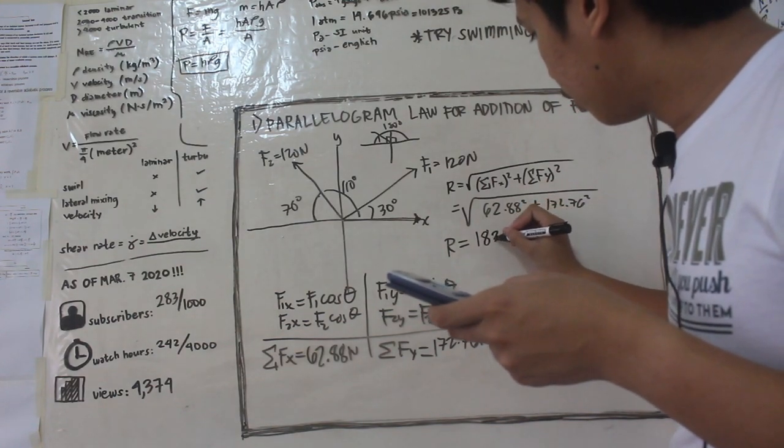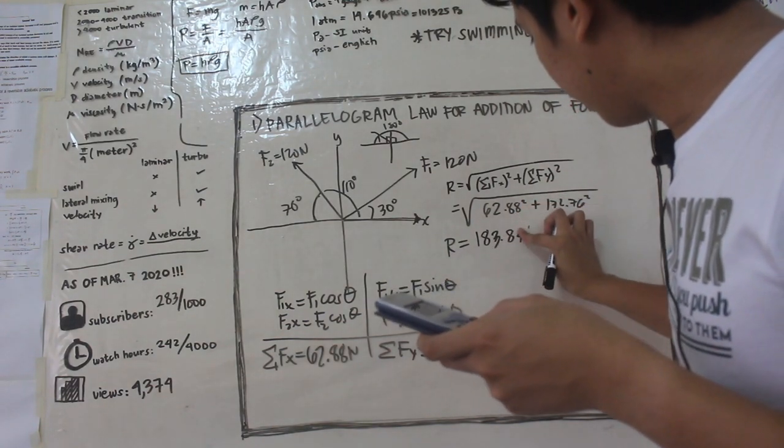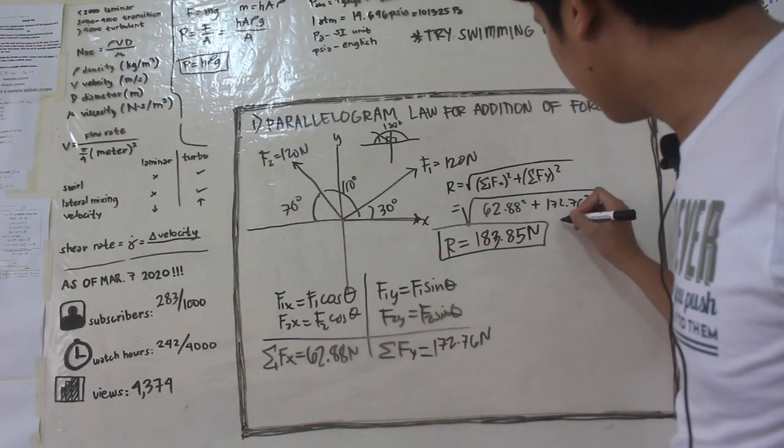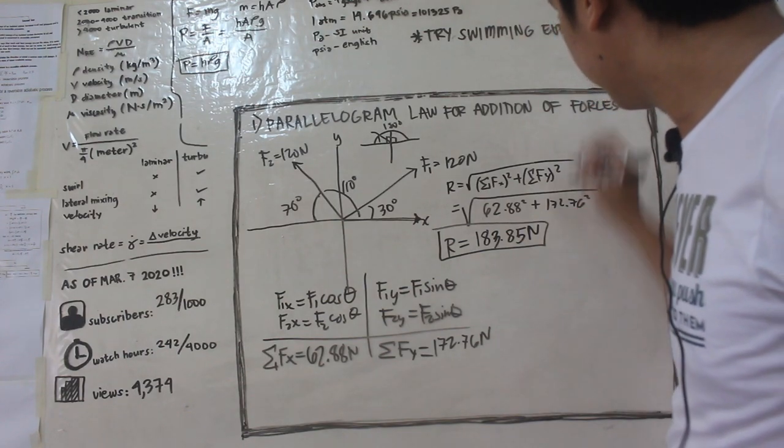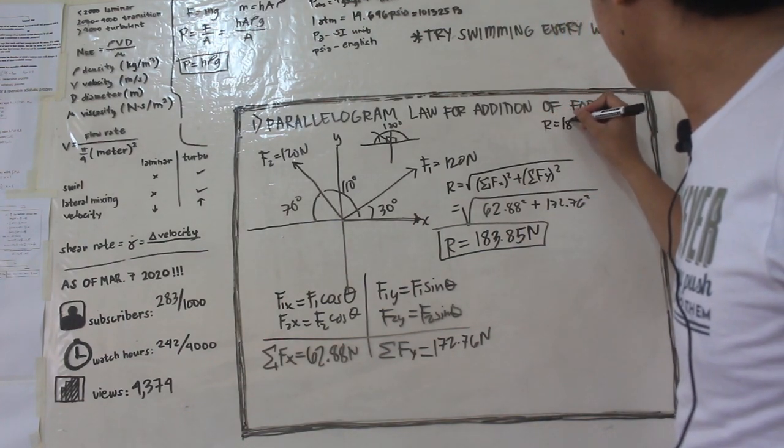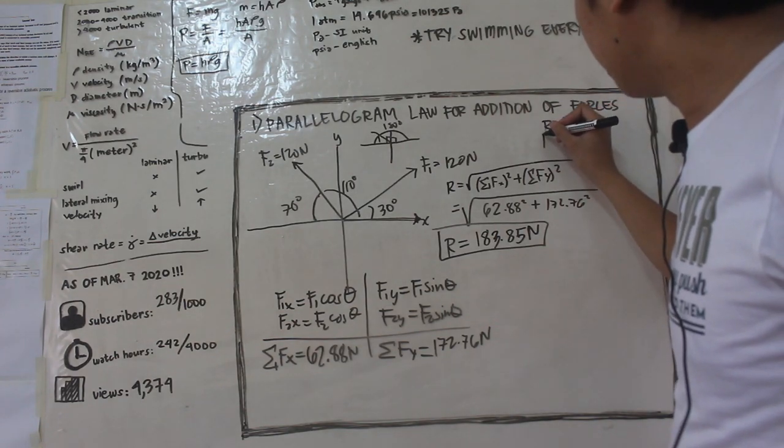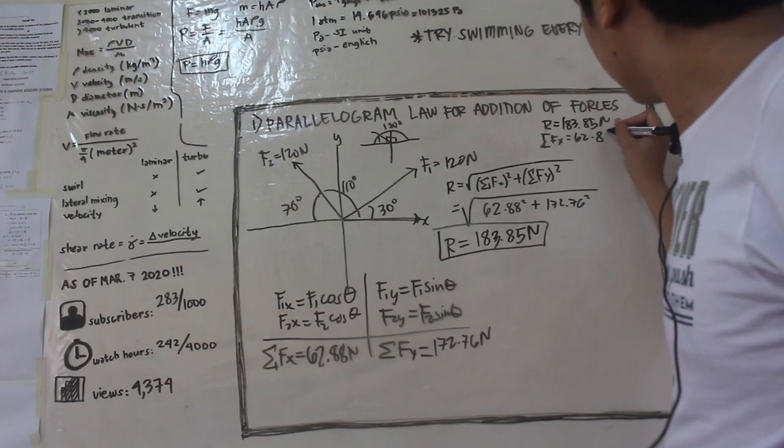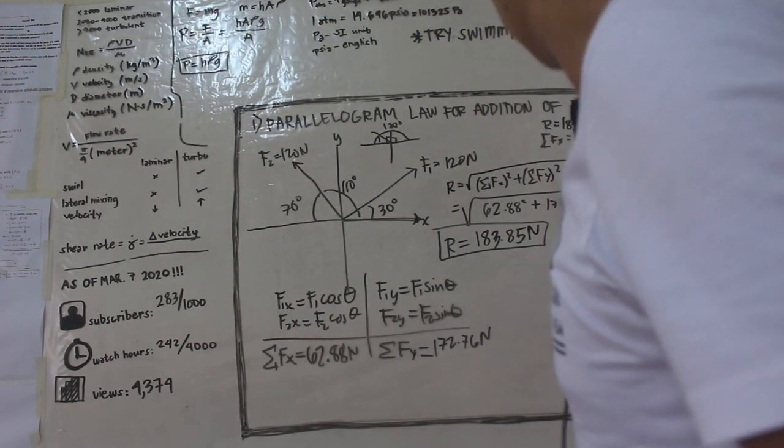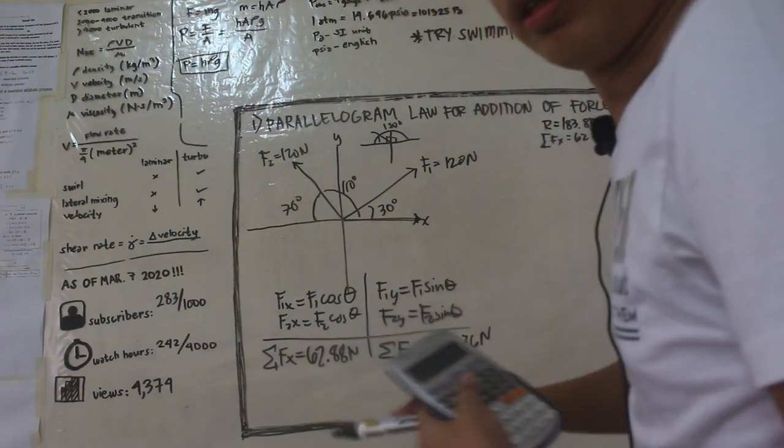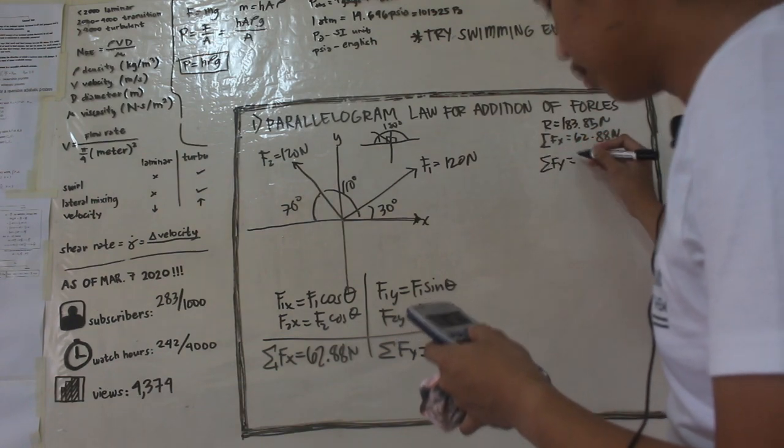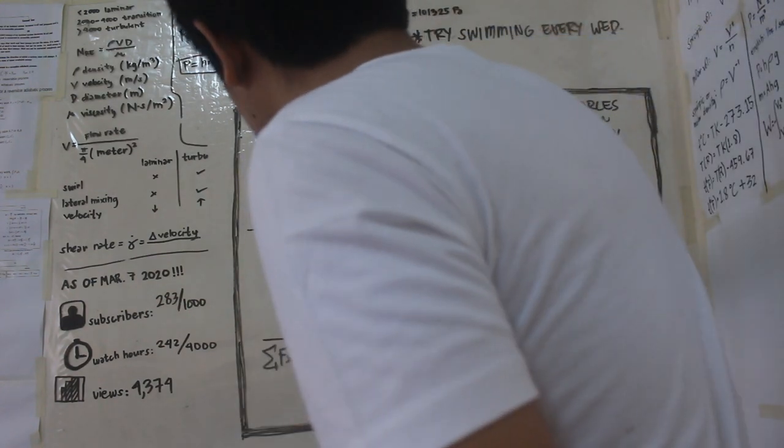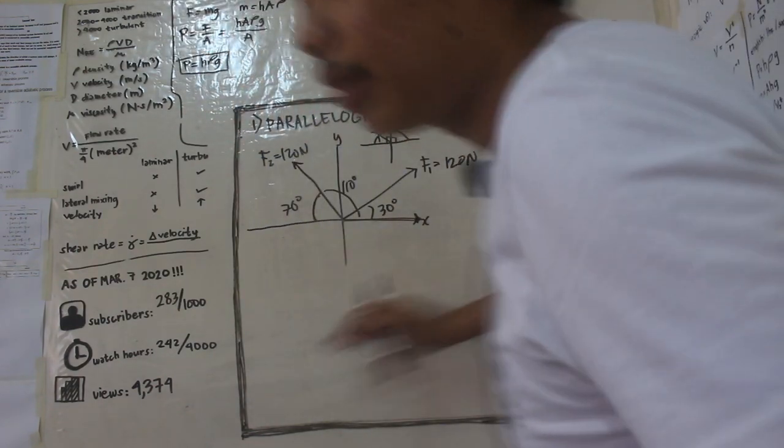183.85 newtons. So ito yung resultant vector natin. Sulat natin dito. So r is equal to 183.85 newtons. Summation f of x is equal to 62.88 newtons. Summation f of y is equal to 172.76 newtons. So i-erase ko na dito guys.